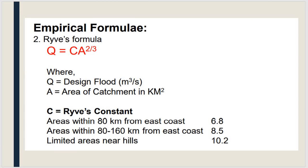The next method is Rive's formula, developed for the eastern coastal region. The formula is Q = C × A^(2/3), where Q is the design flood and A is the catchment area. C is the Rive's constant: 6.8 for areas within 80 km from the east coast, 8.5 for 80–160 km, and 10.2 for limited areas near hills.